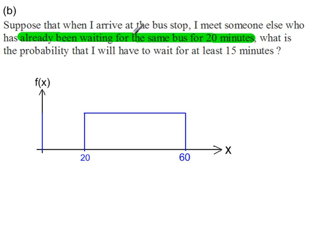Part B, there's a restriction this time. So I meet someone else who has already been waiting for the same bus for 20 minutes, so I can modify some of the wording here and think of it like this: given that someone else has already been waiting for the same bus for 20 minutes. So now I've restricted the values of x between 20 and 60. This is conditional probability.